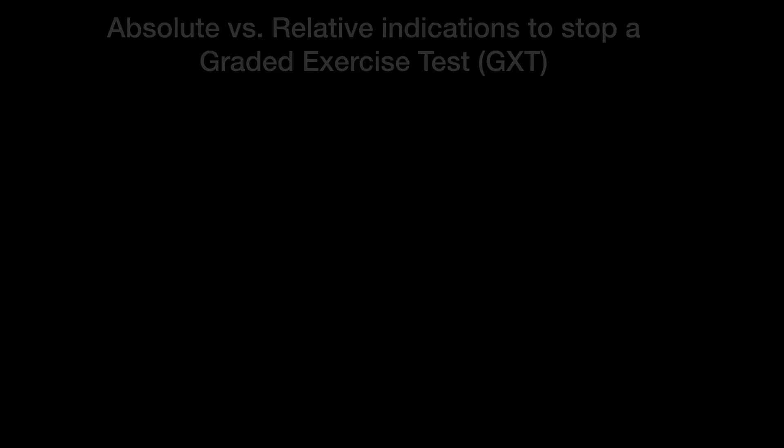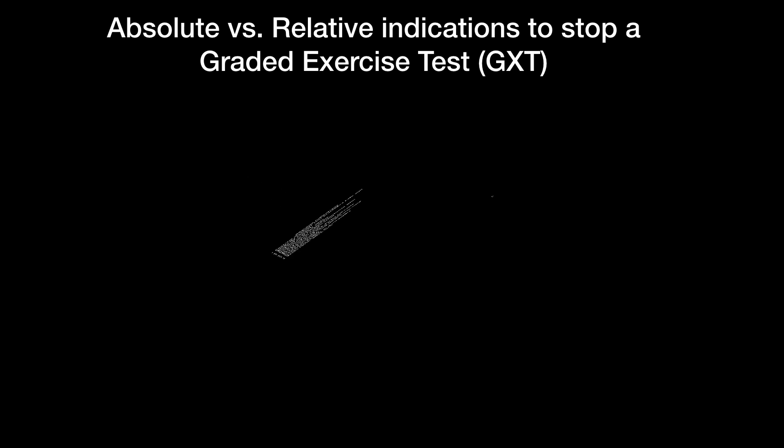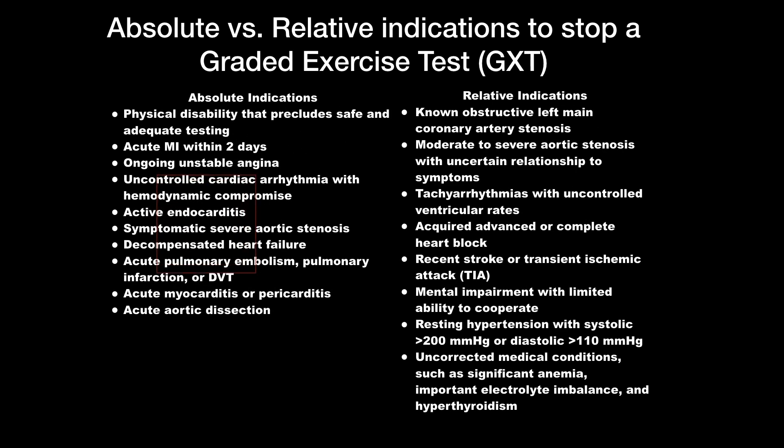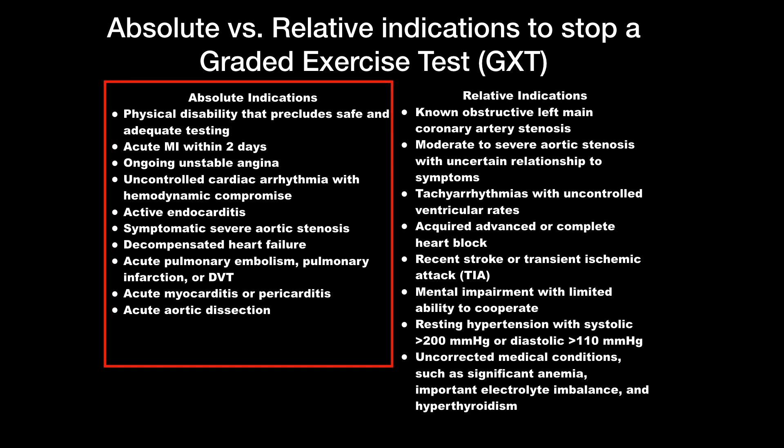This is not an exhaustive list, but here are some absolute indications for stopping these two protocols: physical disability that precludes safe and adequate testing, acute MI within two days, ongoing unstable angina, uncontrolled cardiac arrhythmia with hemodynamic compromise, active endocarditis, symptomatic severe aortic stenosis, decompensated heart failure, acute pulmonary embolism, pulmonary infarction or DVT, acute myocarditis or pericarditis, and/or acute aortic dissection.